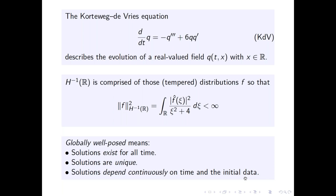The KdV equation was introduced by Korteweg and de Vries more than a hundred years ago. Their motivation was to resolve a big controversy in science. At the time, scientists believed waves must necessarily steepen and break, yet they were experimentally observing solitons and did not know how to explain their existence. A big triumph of Korteweg and de Vries was writing down an explicit simple equation modeling water waves for which one can write down solitons explicitly.